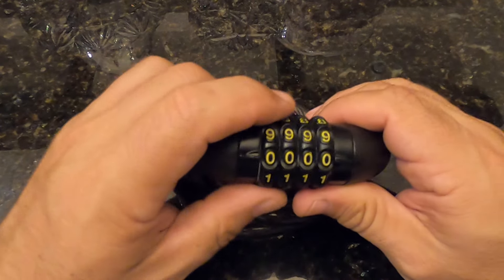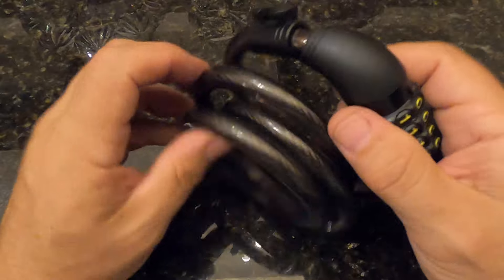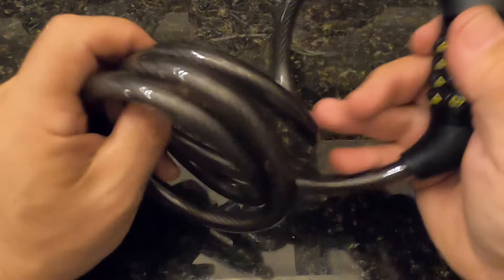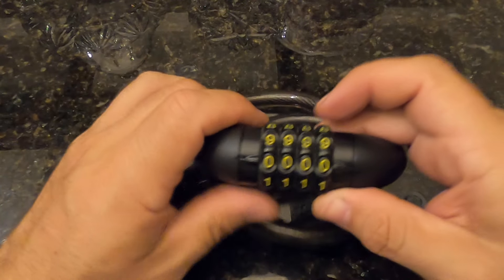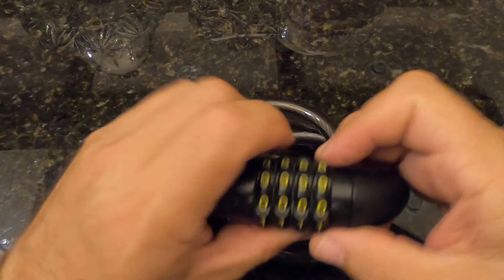What I have for you today is a bike lock with one of these four digit combinations. Now, no matter how strong the cables are on these locks, the weak point is always the lock itself. And I'll show you how to decode these very quickly.